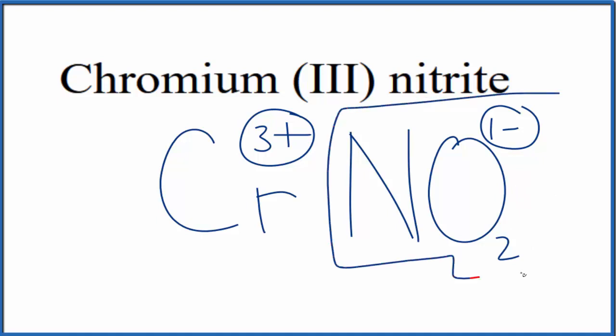To do that, we'll need to have 3 of these nitrite ions here. 3 times 1-, that's 3-, that would balance out the 3+, giving us a net charge of zero.